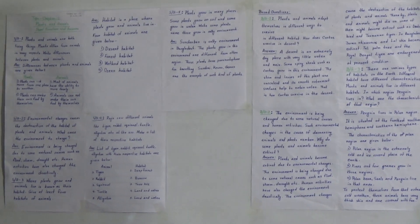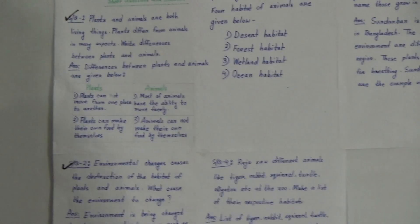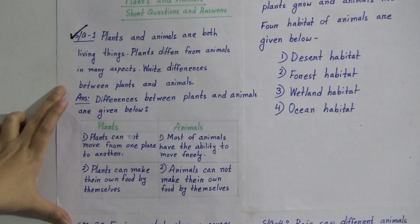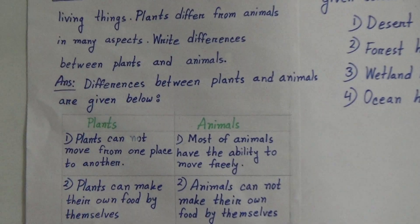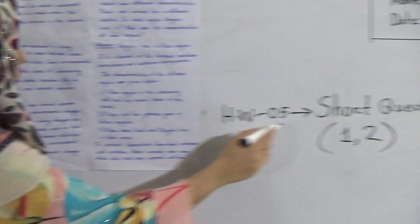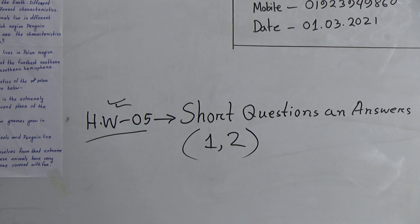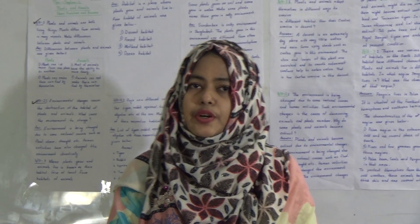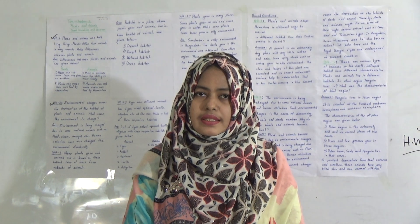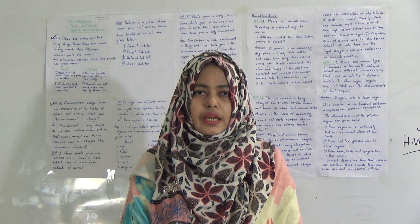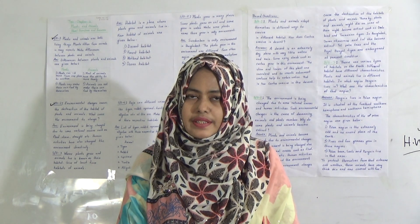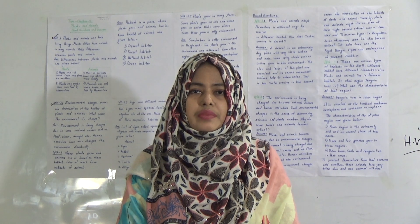There are a total of five short questions. Your homework will be short questions one and two — these two short questions are your HW. When you do your homework, please write your HW number on top of your HW copy and also write the submission date. I hope you have understood today's topic. Keep practicing at home and do your assigned HW in your HW copy. You will submit your HW every Saturday from 9am to 3pm. Stay home and we'll see you again in our next class.